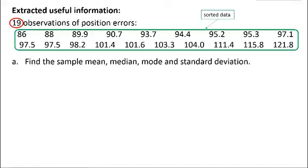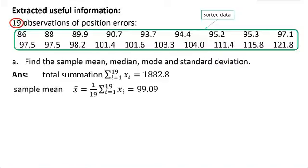Let's begin to solve the first sub-question. We first calculate the total summation of the sample space. It's very easy with help of a calculator. We get 1882.8. Then divide by the sample size 19, we get the sample mean, 99.09.